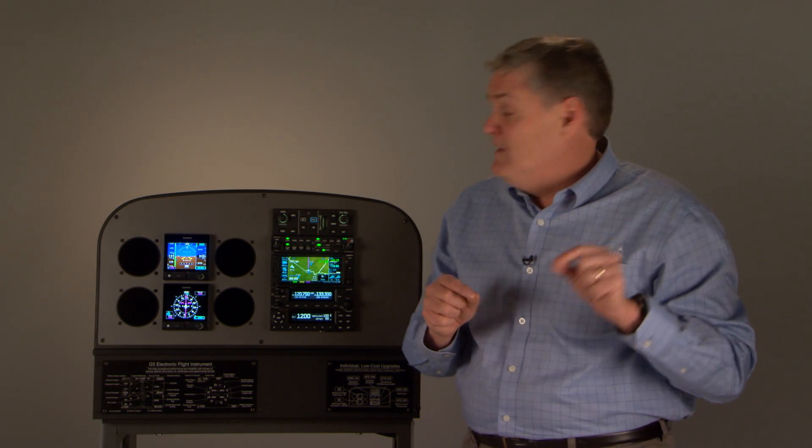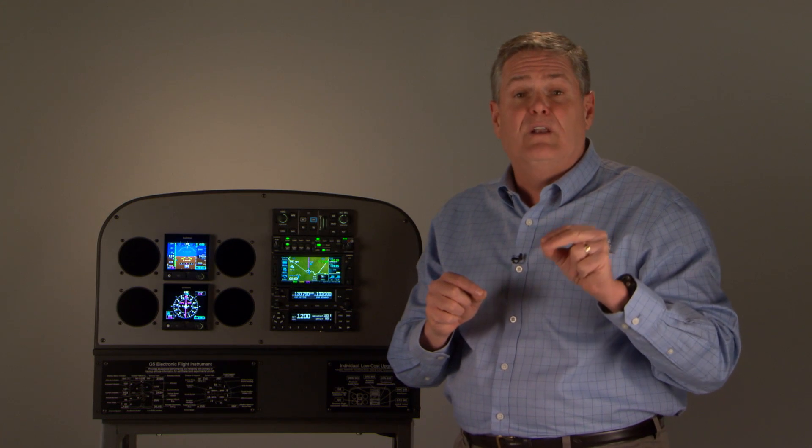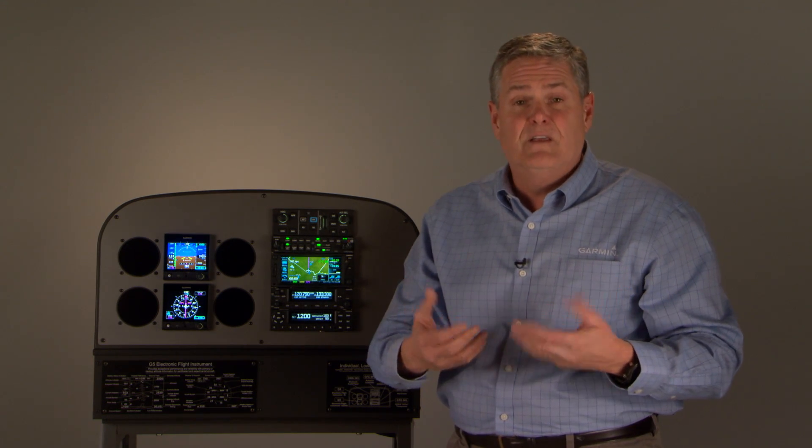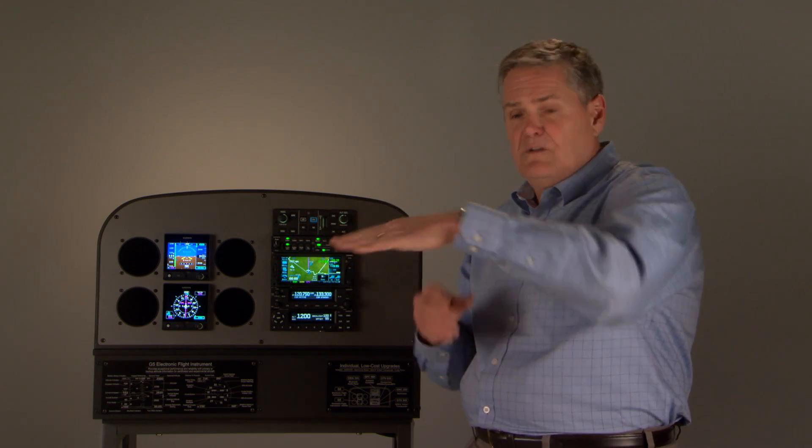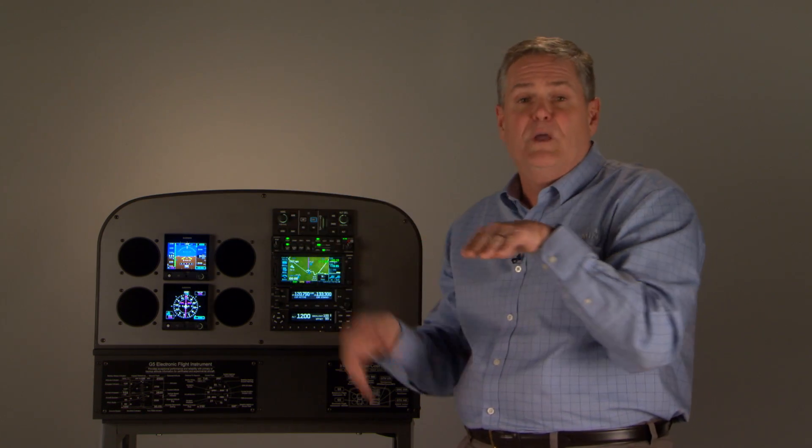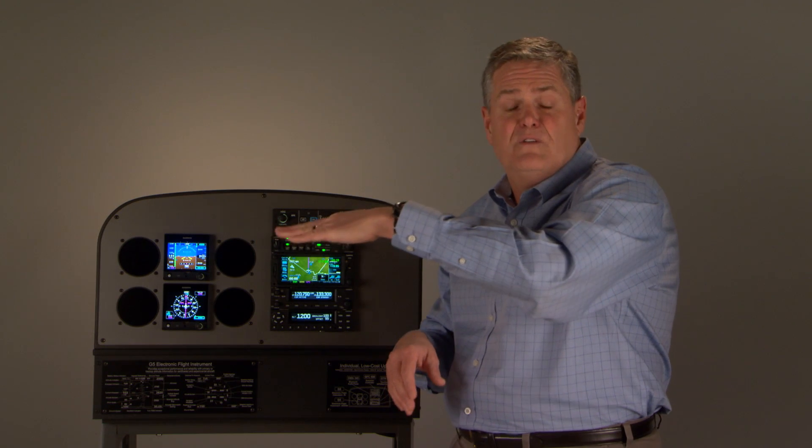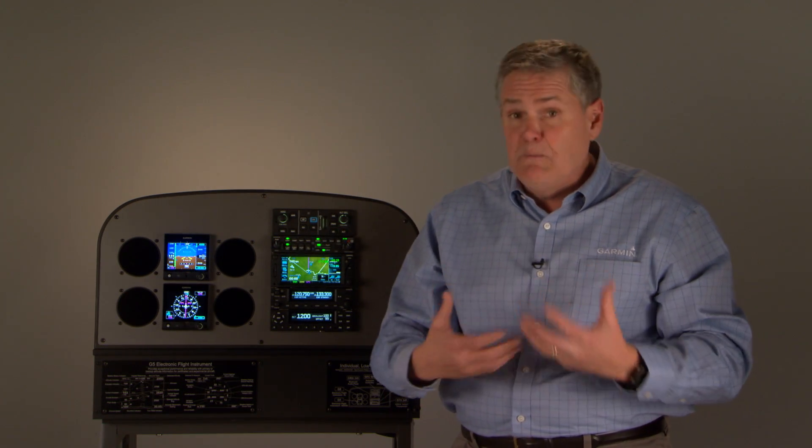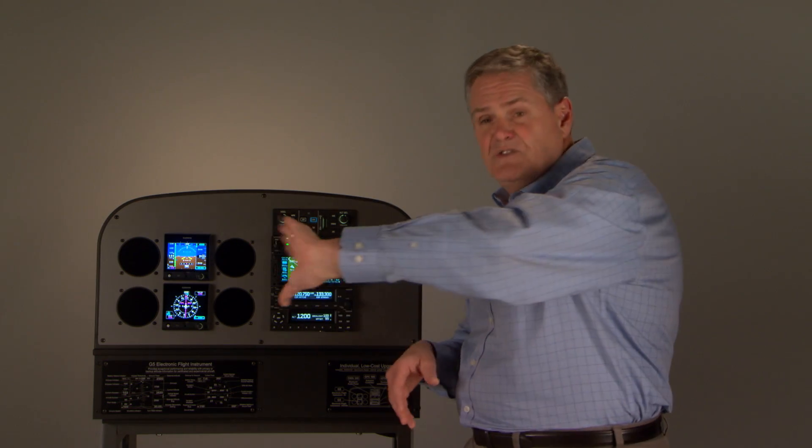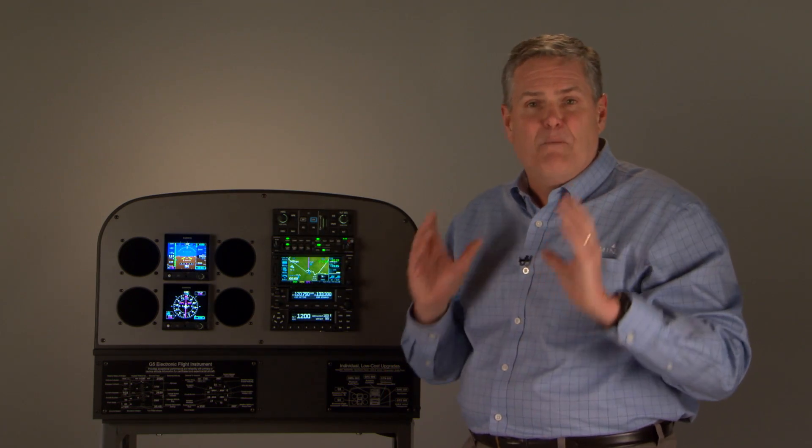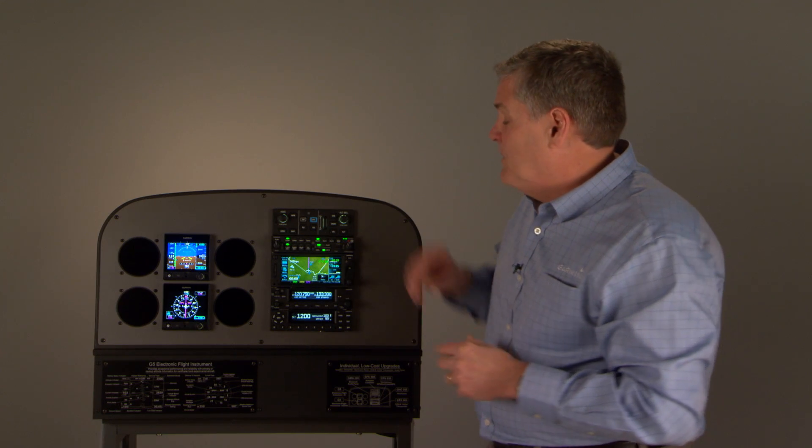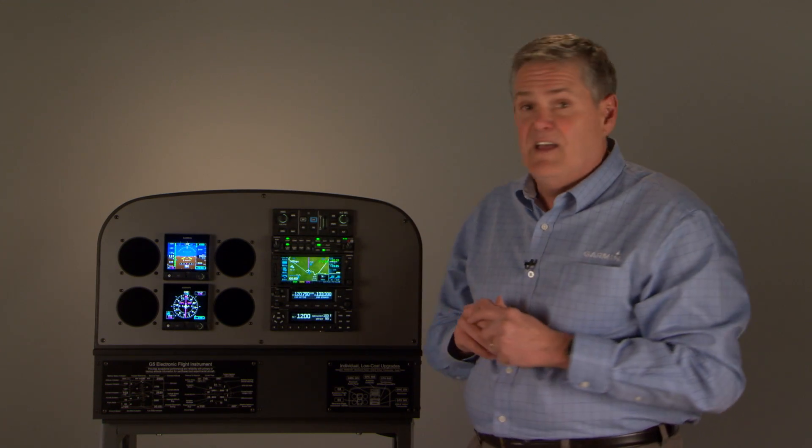Another feature you get in this is what we call roll steering. So if you have a third-party autopilot, what roll steering will do is smooth that transition as you sequence through the waypoint. So you get a nice turn on to the next leg. This is especially important when you're doing the GPS approaches and it transitions you at 90-degree turns. You get beautiful intercepts with it. And that's all included in this HSI.